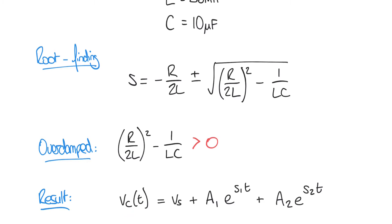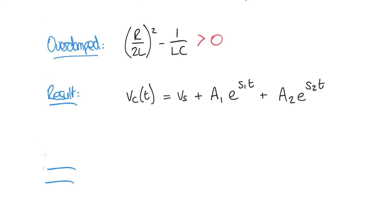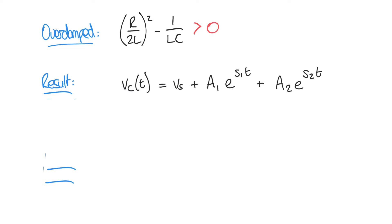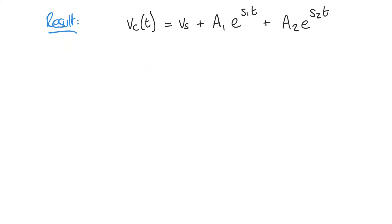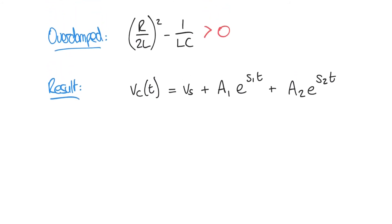The solution form is: VC(t) = VS + A1·e^(S1·t) + A2·e^(S2·t). S1 and S2 are the two possible roots of the characteristic equation, which we find using the root-finding equation. The constants A1 and A2 also need to be found. We know the equation takes this form as long as the discriminant is greater than zero.